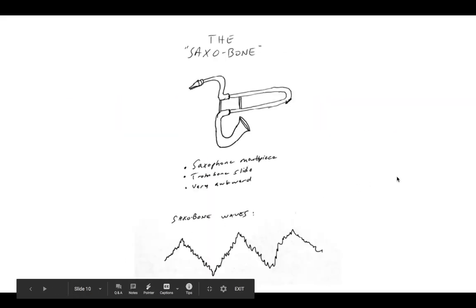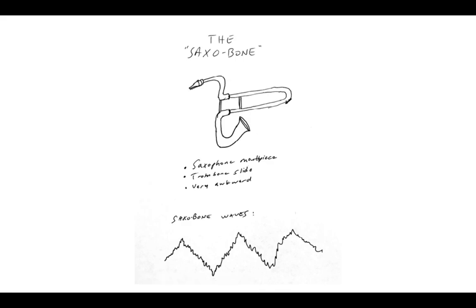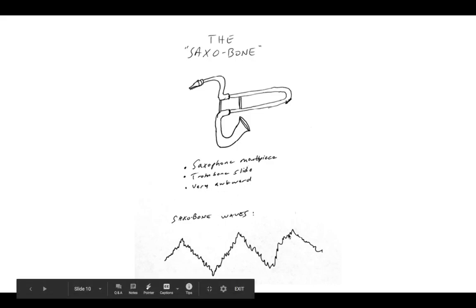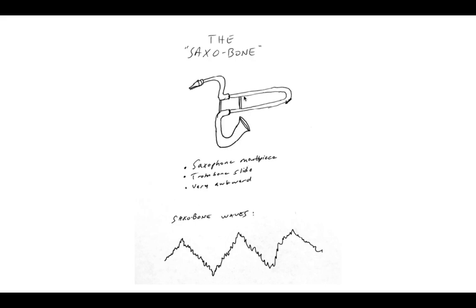All right, I've gone ahead and given you an example here. So this is what I came up with. It's called the saxabone. It's a combination, obviously, of a saxophone and a trombone. My three tidbits are, it has a saxophone mouthpiece, but it has a trombone slide, and it's very awkward. And here are my saxabone waves. So that's all you got to do. Picture, name, three tidbits, waves, upload to Schoology. You're done. Have a great weekend. See you next time.